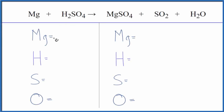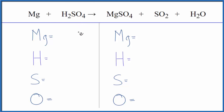In this video, we'll balance the equation for Mg plus H2SO4. This is magnesium plus sulfuric acid. And to get these products here, this is going to be concentrated sulfuric acid. If it was just dilute, we'd get MgSO4 plus H2. So we're assuming we have concentrated sulfuric acid.